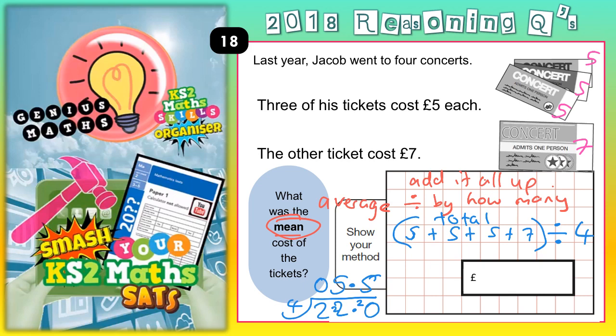Put your decimal point back in. And because we're dealing with money, it's £5.5 — but don't forget, £5.5 is £5.50. So your final answer is £5.50.